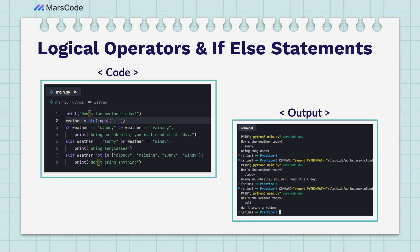ELIF, which means else if, checks if the weather equals 'sunny' or 'windy', and if so prints: bring sunglasses. Regarding the AND operator — in this example there is no AND, but if there were, it would mean two statements both have to be true. We can't say if weather equals 'cloudy' AND weather equals 'rainy' for one variable, because one variable can't hold two different values at once. If we had two different variables, then we could use the AND logical operator.